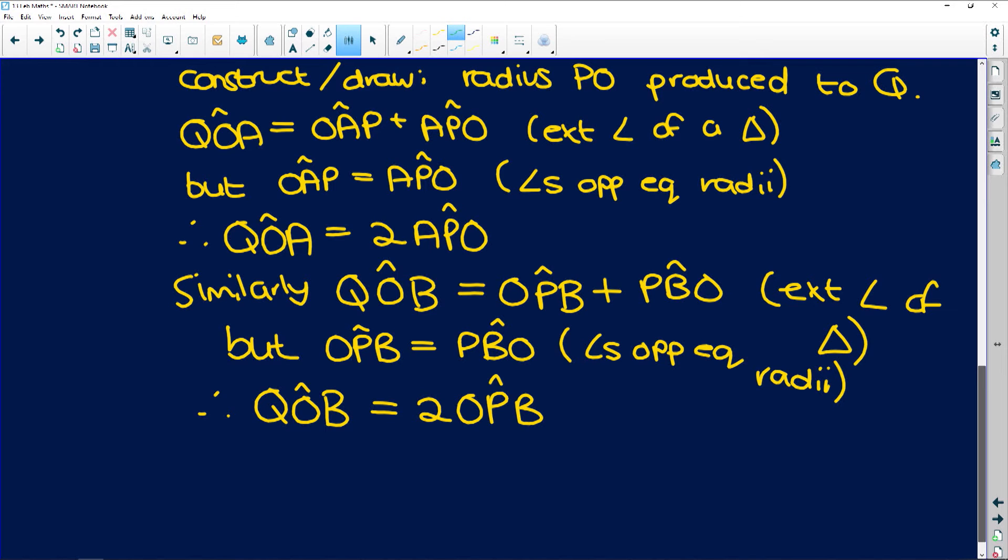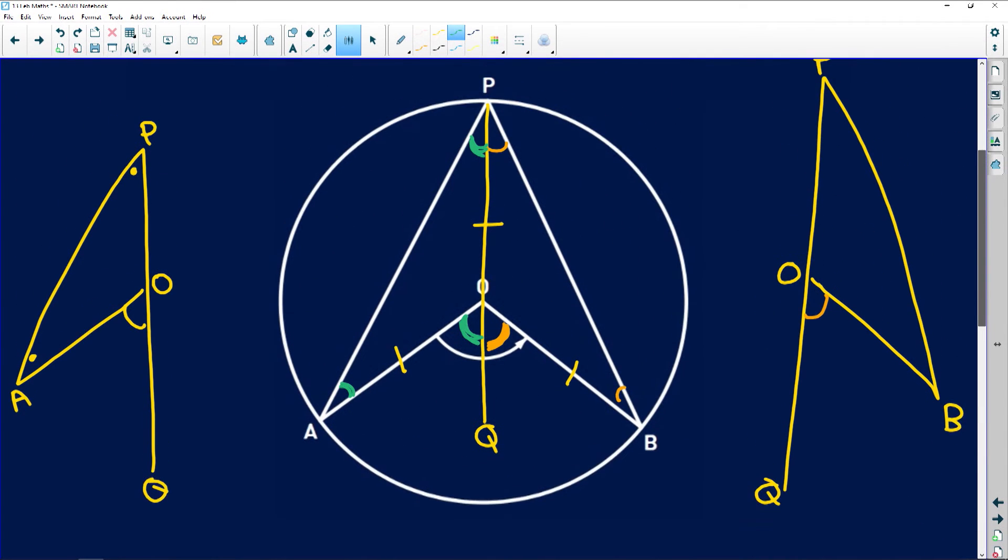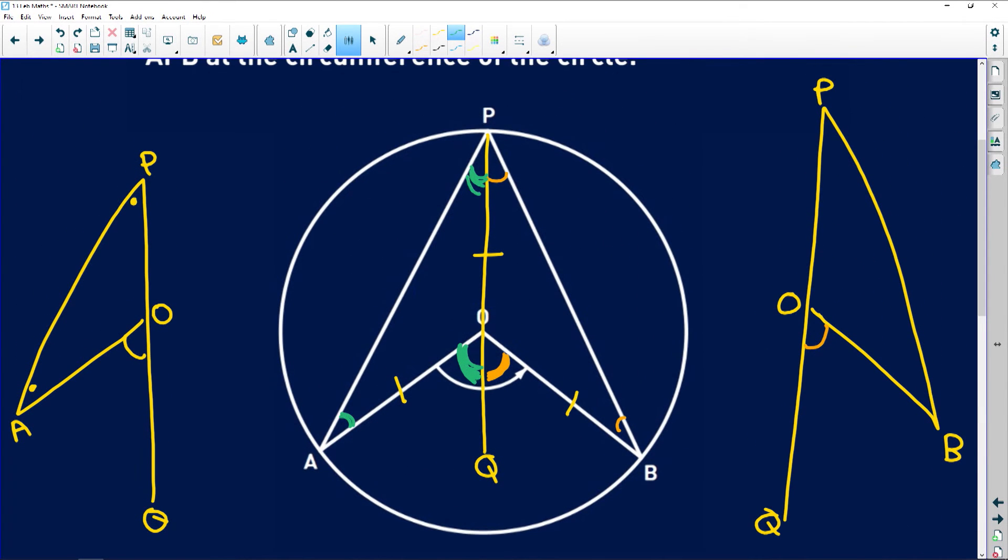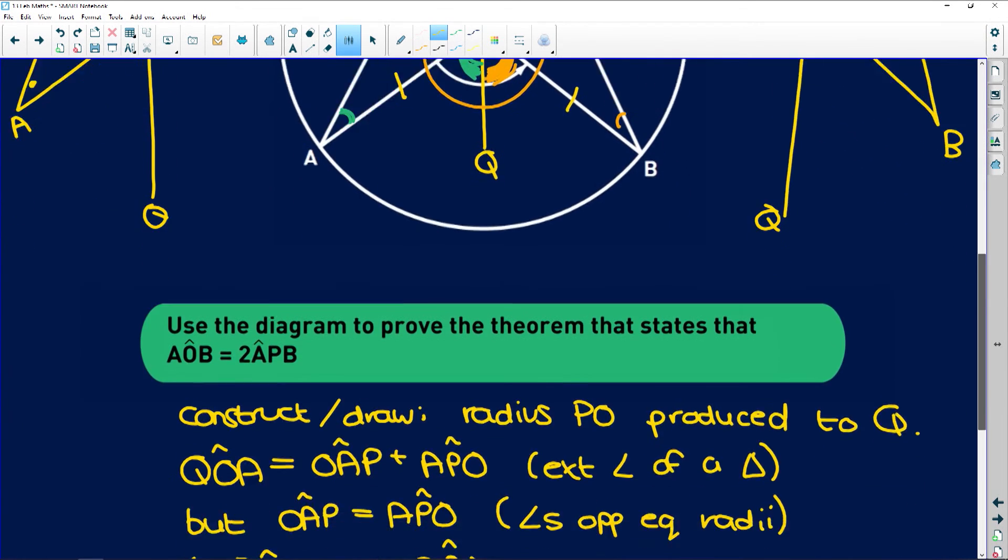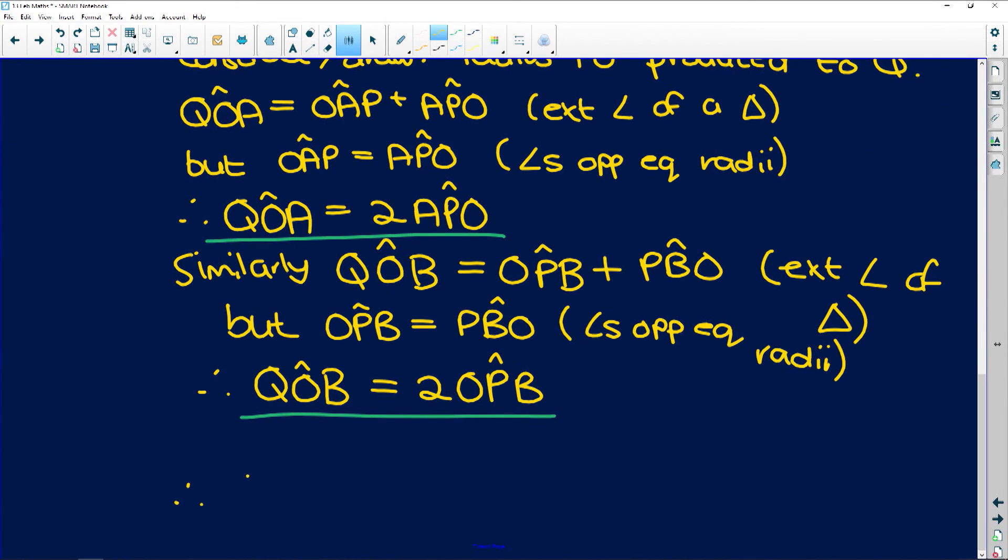So these here are very important pieces of information because we've now established that over here we've got this angle that is twice that angle on the circumference, and this angle that is twice that angle on the circumference. So if we add these angles together we get the angle at the centre. Therefore, QOA plus QOB is equal to 2APO, which is what we proved over here, plus 2OPB, which is what we proved over there.